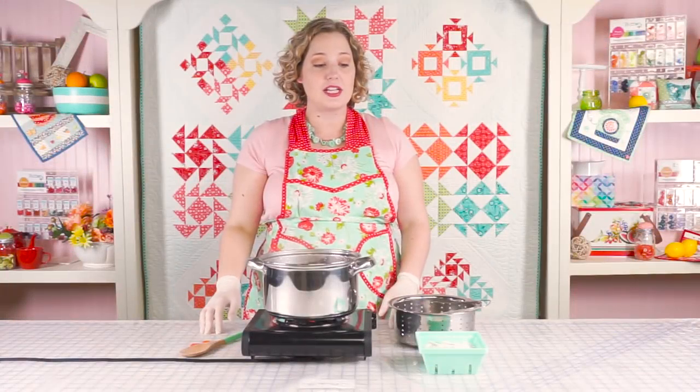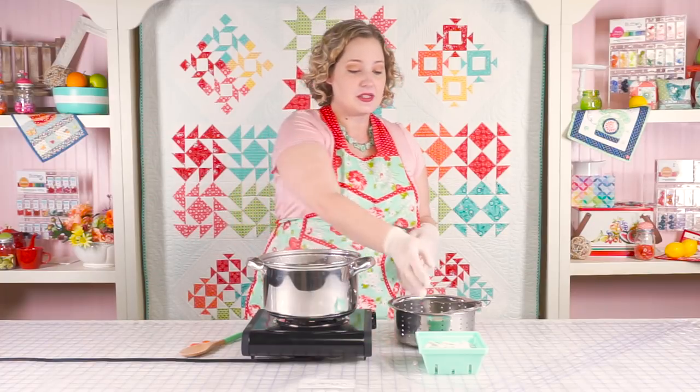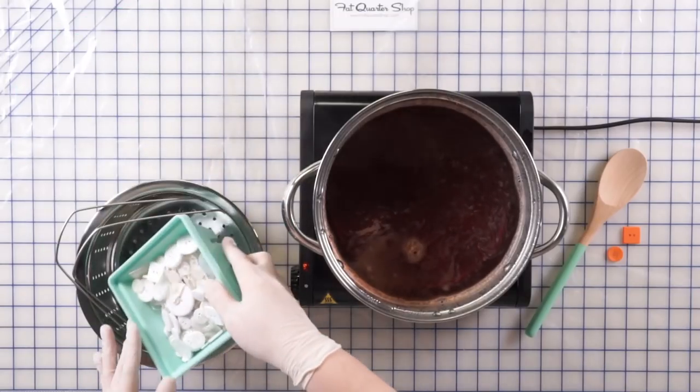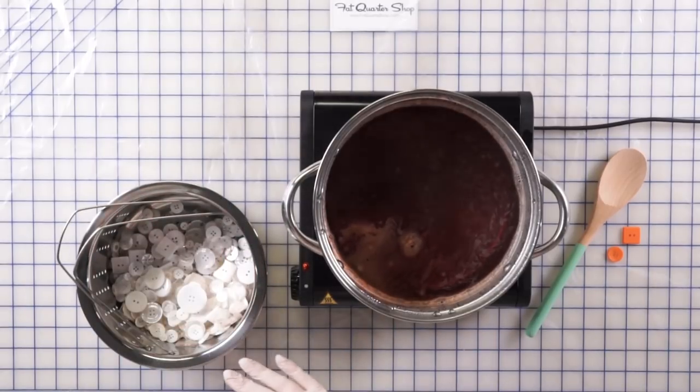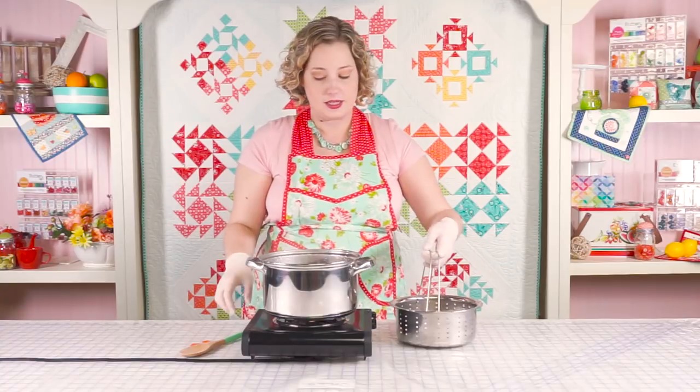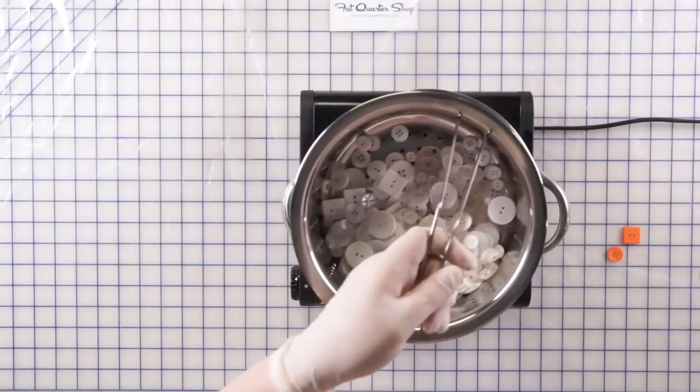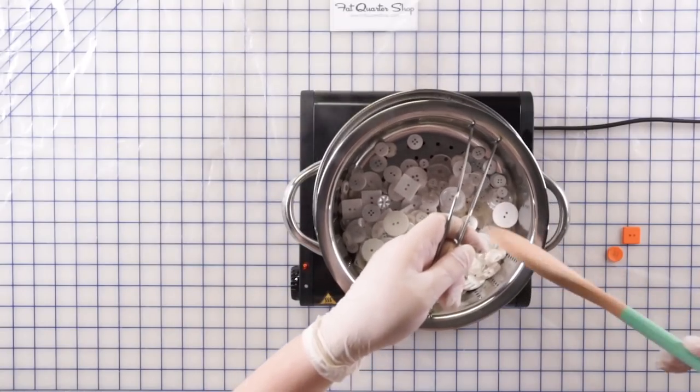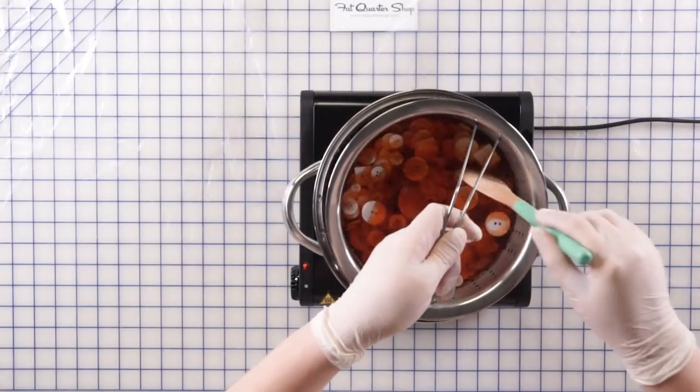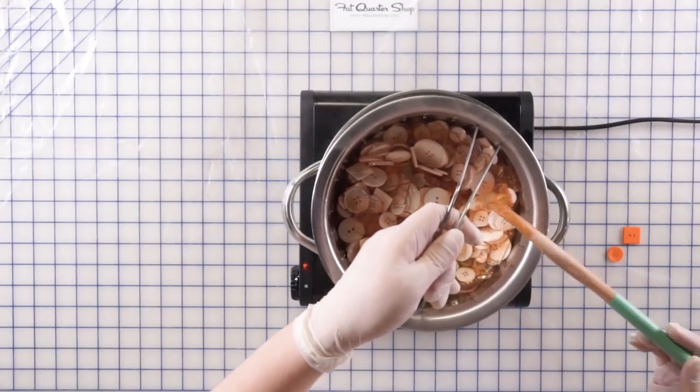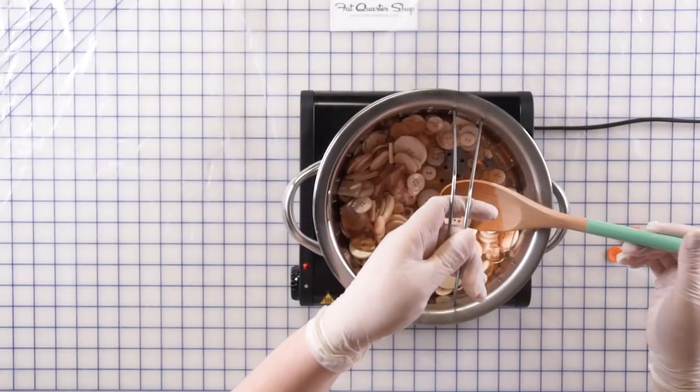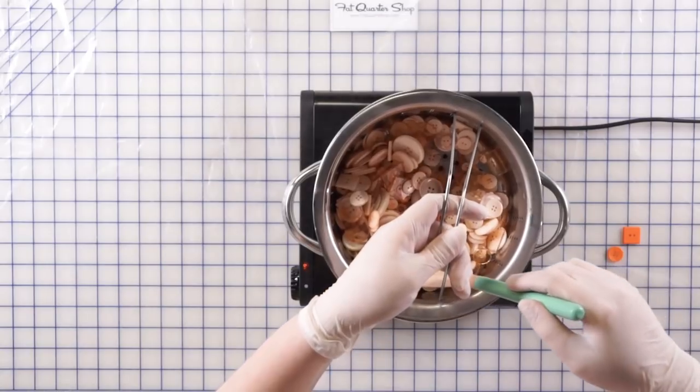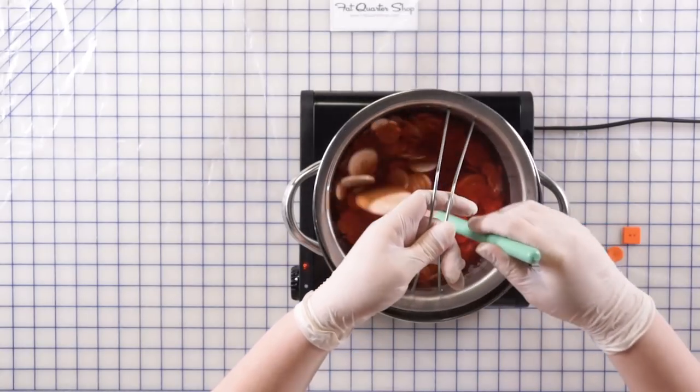All right, now I'm ready to put my buttons into my dye. So I'm going to pour my white buttons into my strainer basket and I'm going to slowly lower them in. I don't want to splatter. I'm going to mix them up real fast and pull them up to check just to make sure it's not going to go too fast. I've got a little bit of color but not much yet, so I didn't over-concentrate my dye.